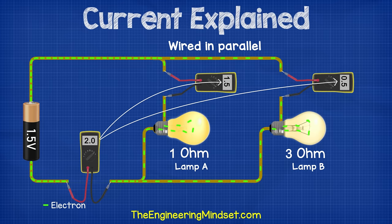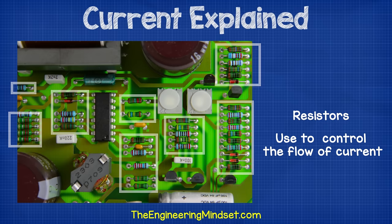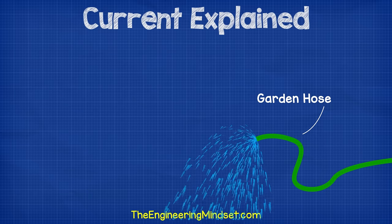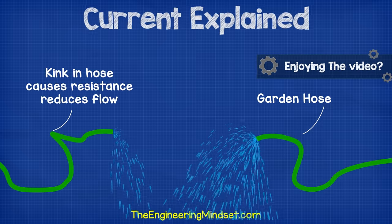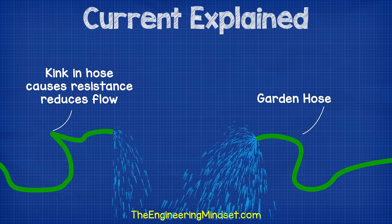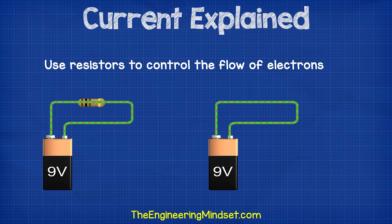Now, lamp B was dimmer because the resistance was higher. Cables and lamps are only rated to handle a certain amount of current — if it exceeds this, they can burn out. So to restrict the amount of current that can flow, we can add resistors into the circuit or into part of the circuit. These act like speed bumps and slow the electrons down. Resistors are like putting a bend into a garden hose — the kink adds resistance to the flow of water, which reduces the amount of water that can flow out of the hose. Similarly, we can add resistors to the circuit and it slows down the electrons.